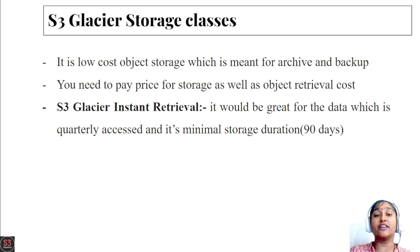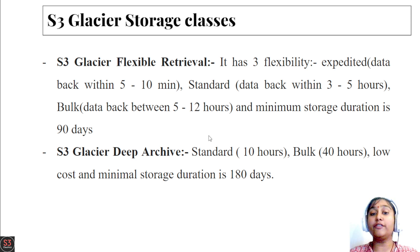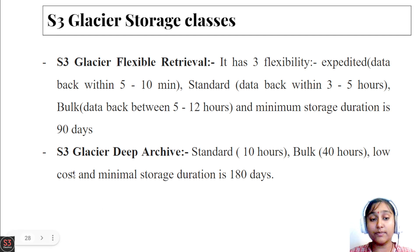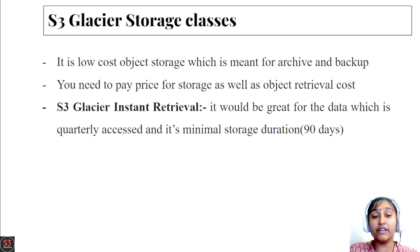The last Glacier flavor is S3 Glacier Deep Archive, also referred to as long-term storage. It has two tiers: Standard retrieval takes up to 12 hours and Bulk retrieval takes 48 hours. It is the lowest cost option because it is for long-term storage, and the minimum storage duration is 180 days.